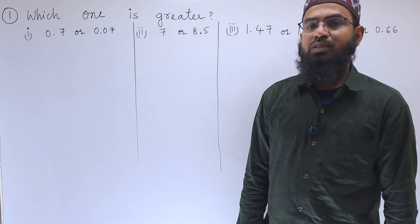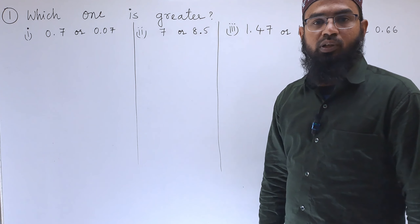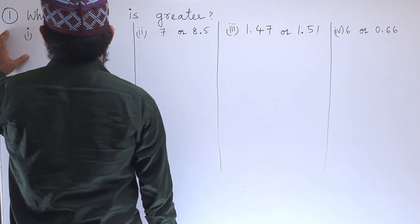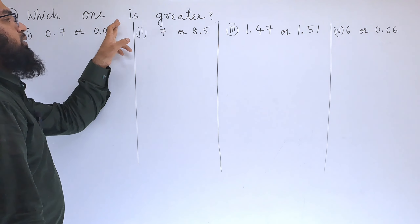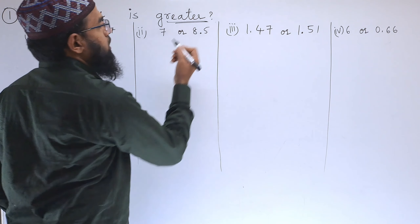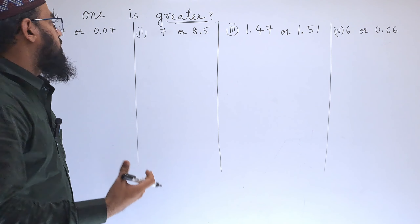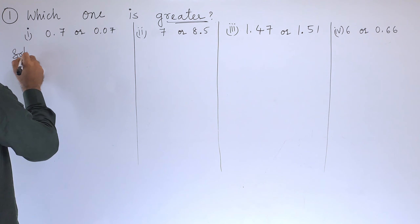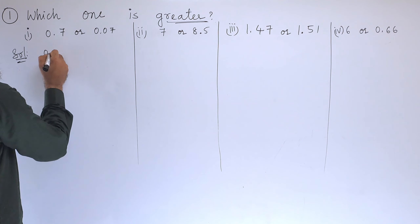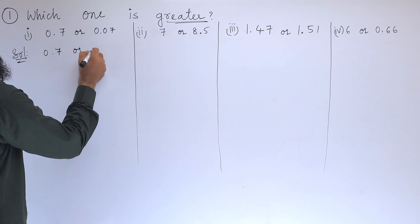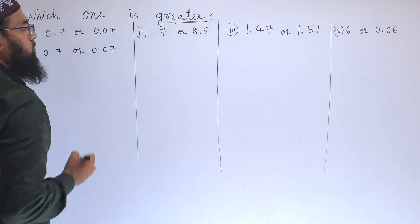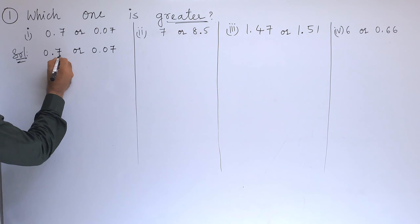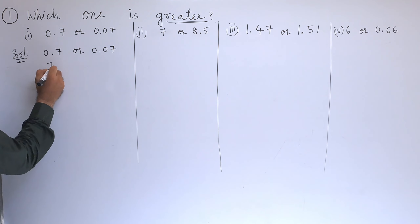In this video I am going to explain the first problem. Which one is greater — greater means the larger or bigger. Let us see: the first problem is 0.7 or 0.07. First we will equate the denominators. After decimal there is a single digit so we will write that.